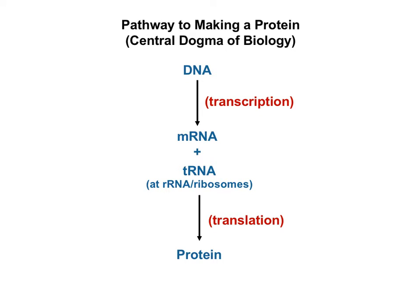Here's another way of looking at it. We call this the central dogma of biology: we take the information in DNA, copy it onto mRNA using transcription, and then with the help of tRNAs and ribosomes — which are made of rRNA — we have the process of translation translate the RNA into protein. All three types of RNA are going to be used. mRNA is the copy of the gene from DNA. tRNA helps assemble the proteins at ribosomes, which are made of rRNA.